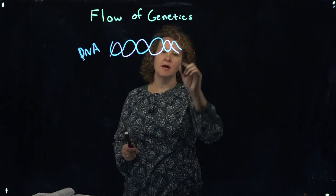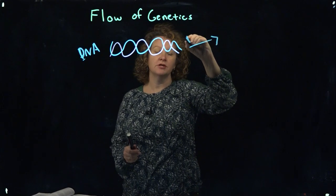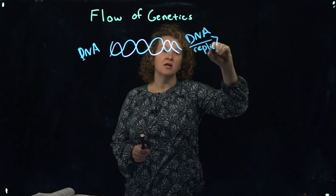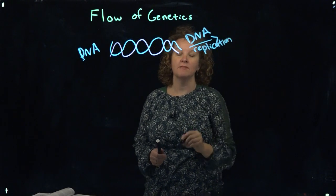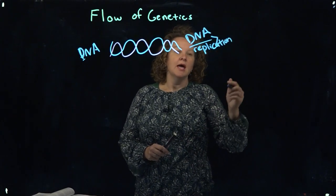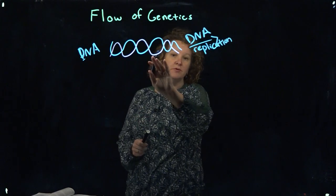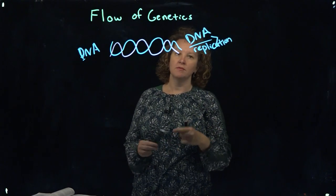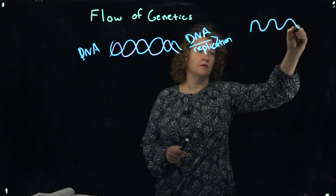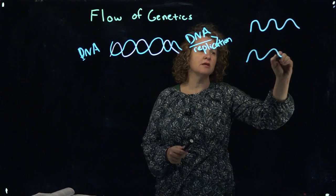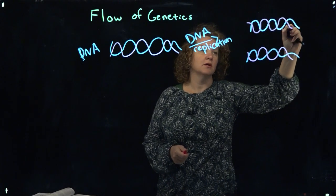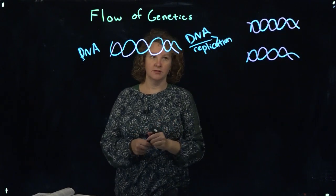One thing happening here is DNA replication, which occurs during processes such as binary fission in bacteria, or mitosis and meiosis in eukaryotic cells depending on the cell type. In DNA replication, you're making duplicate copies of the DNA that are passed down to the daughter cell, in either prokaryotic or eukaryotic cells.